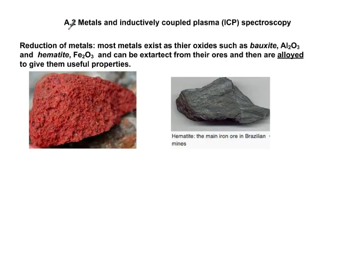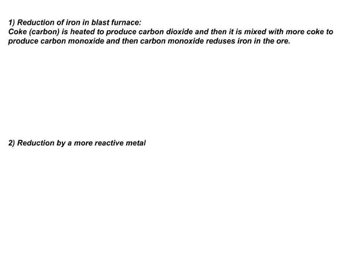In the second part of material science, we're going to look at metals and their extraction. Usually active metals such as iron and aluminum come in their ores. The red one here is bauxite, which is aluminum oxide. The one on the right-hand side is iron oxide. We usually crush them and use a blast furnace to reduce them and bring them out as pure elements.